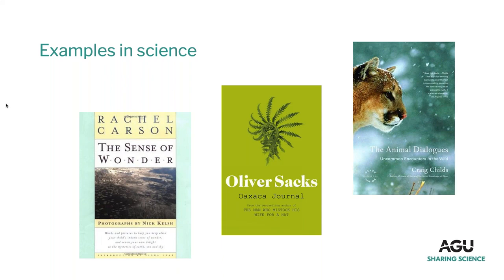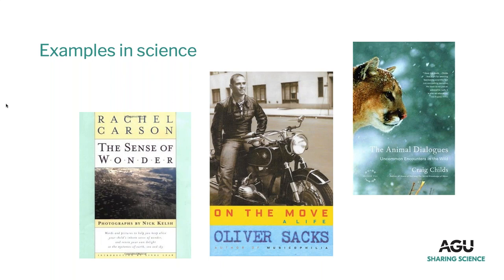Oliver Sacks's Oaxaca Journal is semi-travelogue but also about someone whose whole job was studying neurological disorders who also had a passion for ferns — you can feel the love of it throughout. The Animal Dialogues too is a mixture of zoological information and passion for encounters with the natural world. But you can also fall out of love — those are stories too — or have unrequited love. In his memoir On the Move, Oliver Sacks talks about how, much as he might have liked lab research, it did not like him.